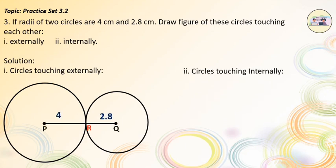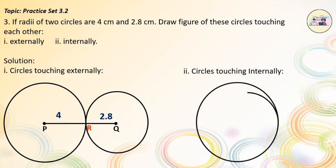Second, circles touching internally. Internally touching circles will have common interior points. The smaller circle will lie inside the bigger one. So they will look like this.